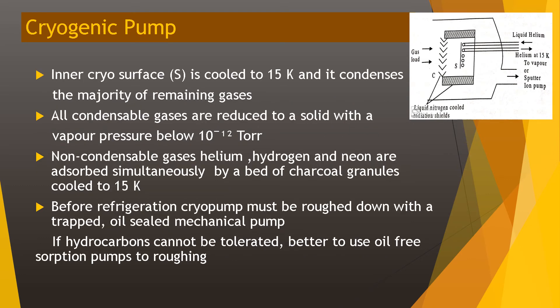The inner cryo surface S is cooled to 15 K and condenses the majority of the remaining gases. All condensable gases are reduced to a solid with a vapor pressure below 10⁻¹² Torr. Non-condensable gases — helium, hydrogen, and neon — are absorbed simultaneously by a bed of charcoal granules cooled to 15 K. Before refrigeration, the cryopump must be roughed down with a trapped oil-sealed mechanical pump. If hydrocarbons cannot be tolerated, it is better to use oil-free sorption pumps for roughing.